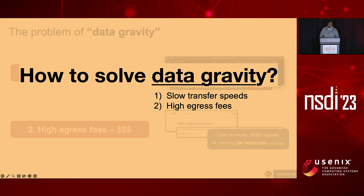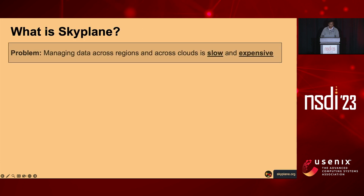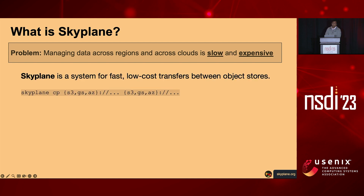In light of these two problems—slow transfer speeds and high egress fees—how do we solve the data gravity problem? This is really important for emerging applications like Sky Computing. Skyplane is a system for fast and low-cost transfers between object stores. We've open-sourced it as a package that anybody can install in five minutes, and they can run Skyplane CP with any S3, Google Storage, or Azure Blob source and any corresponding object store destination. For any source or destination, Skyplane will find the highest throughput and lowest cost path to route data between these two clouds.